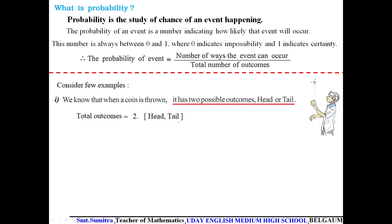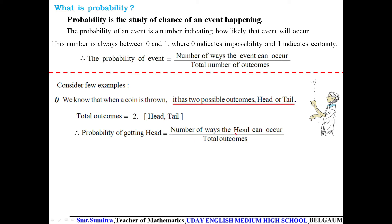We find the probability of getting head. Using the formula: P(head) = number of ways head can occur divided by total number of outcomes. Head occurs only one time, and total outcomes are 2, so P(head) = 1/2.